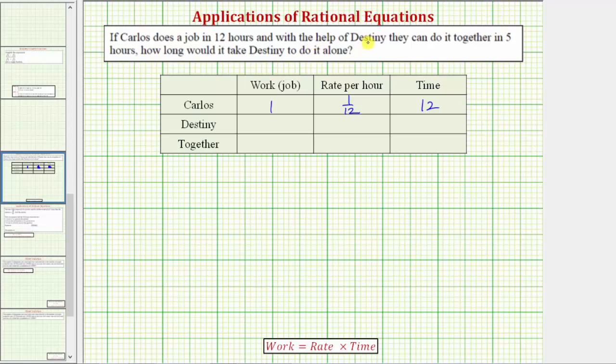Next we know with the help of Destiny, meaning working together they can complete the job in five hours. So going down to this last row, together they can complete one full job in a total time of five hours, which means the rate is one-fifth of the job per hour. So notice how if we know the total time to complete the job, the rate is equal to the reciprocal of the total time.